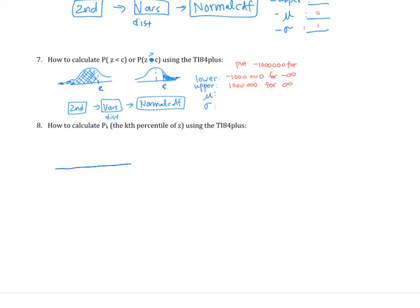For number 8, how to calculate PK, which is the kth percentile. As we mentioned in an earlier section, kth percentile means a place where k percent of the population is less than you. So I want this to be k percent, and what they're asking is what should the score be so that it gives you k percent.